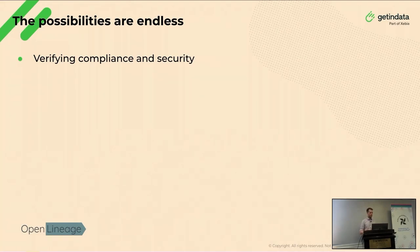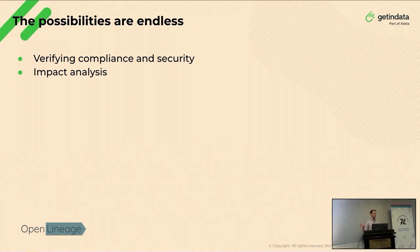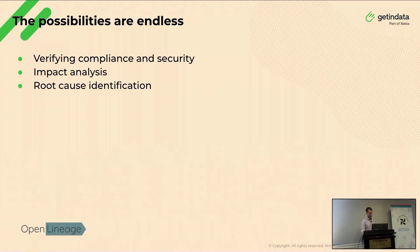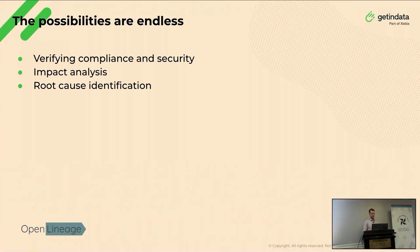Another use case is impact analysis — my pipeline failed and I'm emitting wrong data. I need to know where I need to fix this data, what are the downstream jobs, or at least let the data consumers know they may be receiving wrong data. Then there's root cause identification: imagine you come to work on Monday, have a thousand jobs in your Airflow, and see half of them are red. It would be nice to see it as a graph to see where it all started, so you know where to focus and find the root cause.